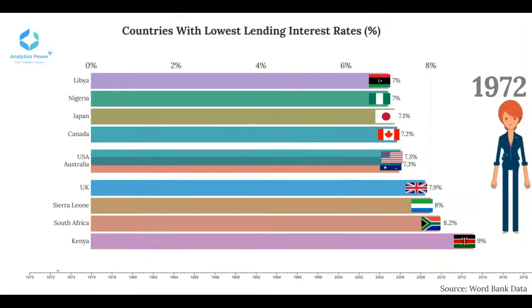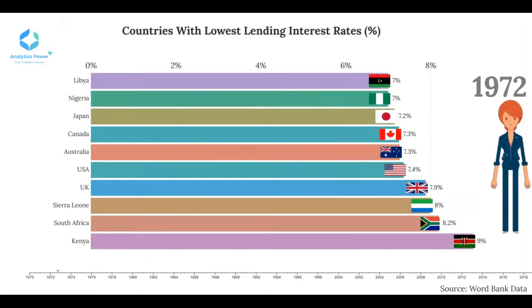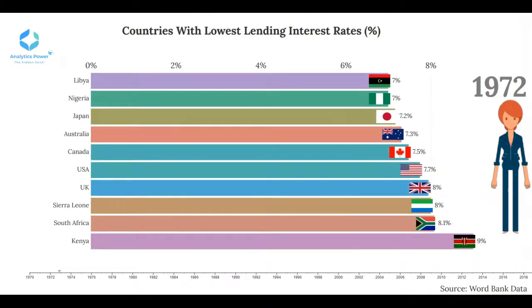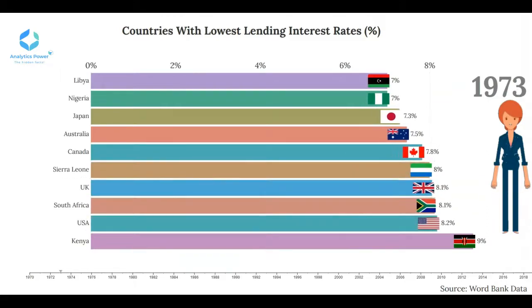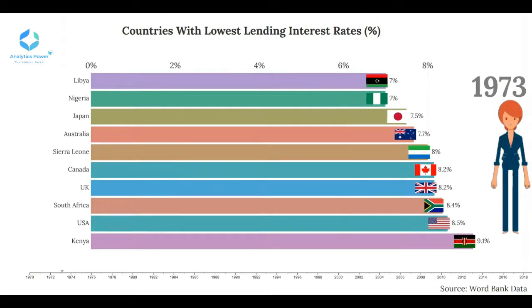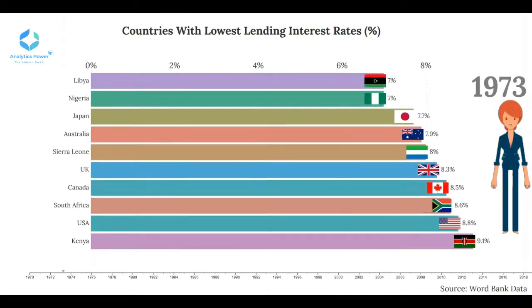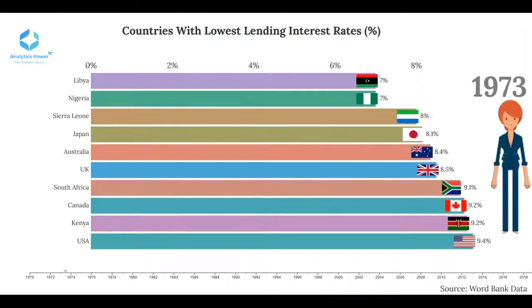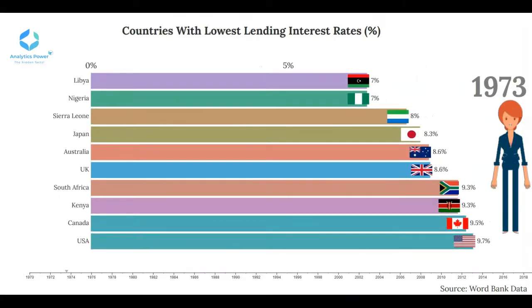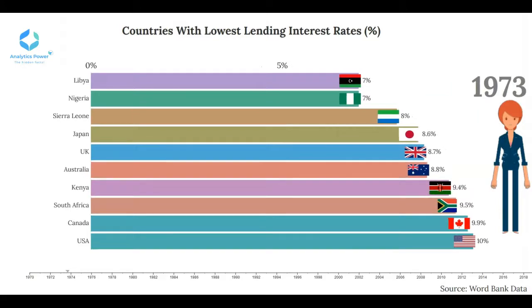The Libyan economy, before the discovery of oil, was backward. Therefore, the Libyan government's priority in the first development plan between 1973 to 1975 was the agricultural sector, which took precedence over the industrial sector. The Libyan economy achieved a high growth rate during the 1970s, which peaked at 9.2% of GDP.